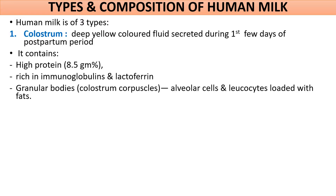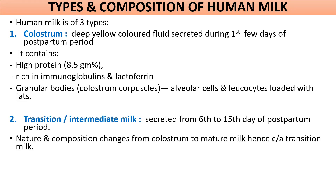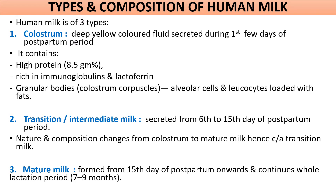Before we discuss the phases of lactation, first understand the types and composition of human milk. Human milk is of three types: colostrum, transition milk, and mature milk. Colostrum is a deep yellow colored fluid secreted by the mammary glands during the first few days of the postpartum period. It contains a high amount of protein and many immunoglobulins and white blood cells. Transition or intermediate milk is secreted from the 6th to 15th day after childbirth. Mature milk is formed from the 15th day after delivery and continues for the entire lactation period.